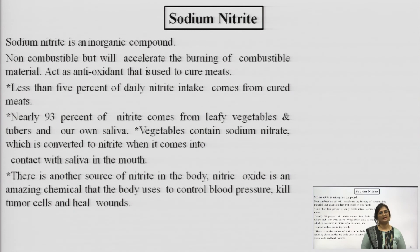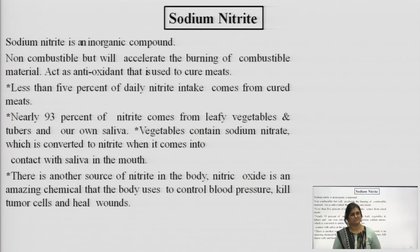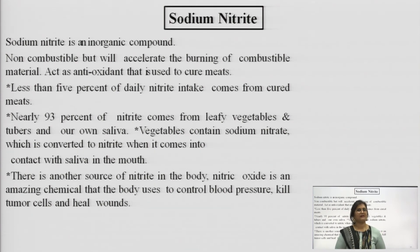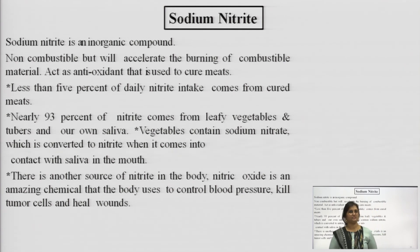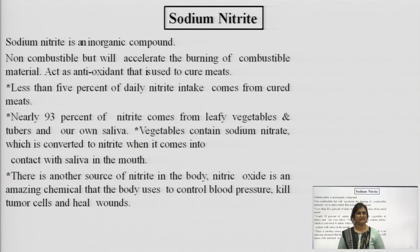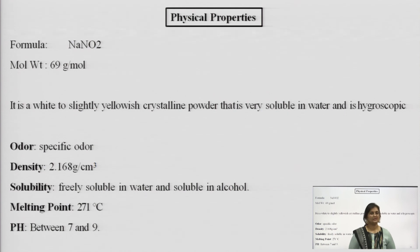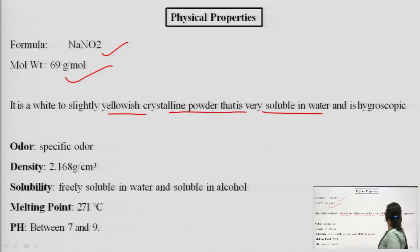Moving on to our next agent, sodium nitrite. It is an inorganic compound, non-combustible but accelerates the burning of combustible material. It acts as an antioxidant and is used to cure meats. Less than 5% of daily nitrite intake comes from cured meats; nearly 93% of nitrite comes from leafy vegetables and tubers. Our own saliva also generates nitrite — vegetables contain sodium nitrate which is converted to nitrite when it comes into contact with saliva.